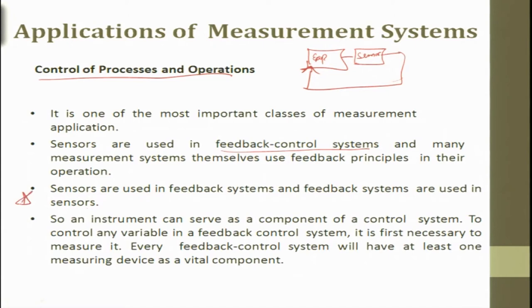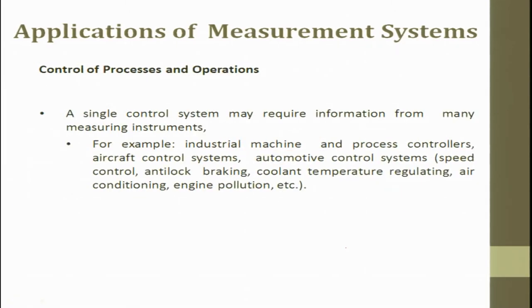An instrument can serve as a component of a control system. To control any variable in a feedback control system, it is first necessary to measure it. Every feedback control system will have at least one measuring device as a vital component. The signal control system may require information from many measuring instruments. Industrial machine and process control is used in cement industry, sugar industry, aircraft control systems where several sensors around the plane look at all conditions and try to control the system to get the output, and automotive control systems.